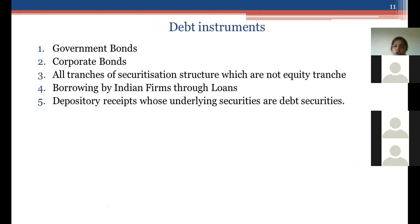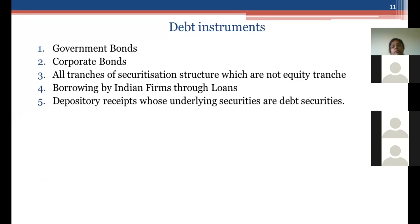Debt instruments are more in the nature of borrowings: government bonds, corporate bonds, all tranches of securitisation apart from the junior-most tranche, borrowings by Indian firms, and depository receipts where the underlying securities are debt securities. The entire list of debt instruments is governed by FEMA Debt Instrument Regulations 2019, while for non-debt instruments we have FEMA Non-Debt Instrument Rules 2019. What was previously one set of TISPRO regulations has been split into two, with separate regulatory authorities.